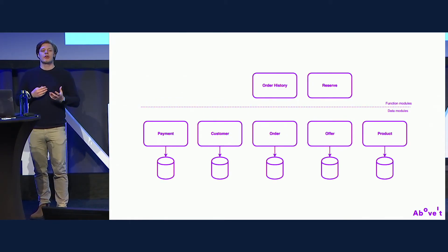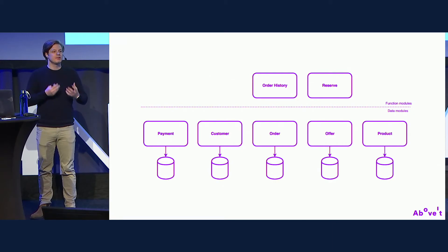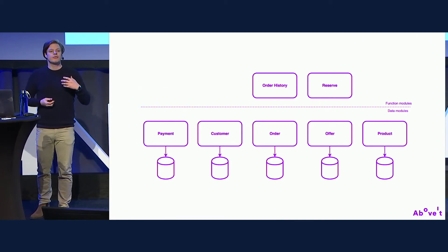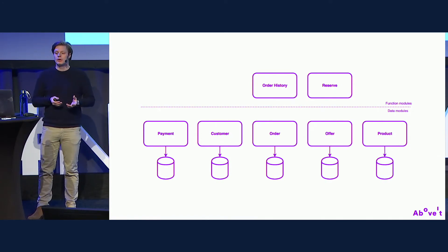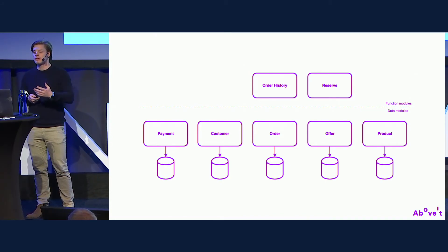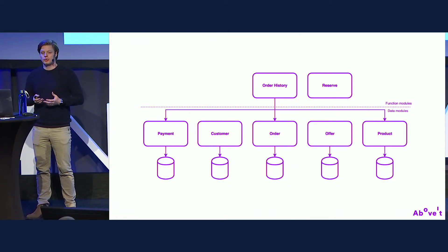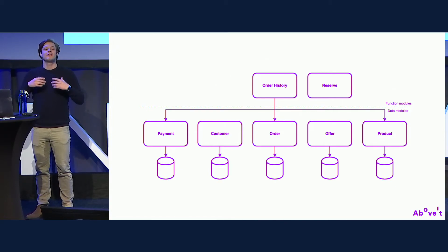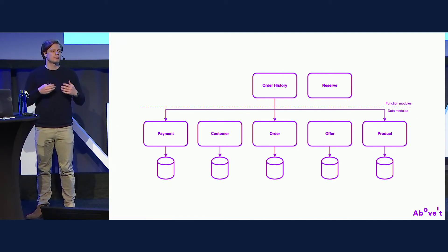Function modules provide or simplify a business function. For example, the order history module combines data from different data modules into a complete history of all purchase travels by a customer. The reserve module makes it easy for customer-facing applications to reserve a trip. When a customer requests their order history, the order history module gathers data from each data module, combines it, and returns it as populated data.